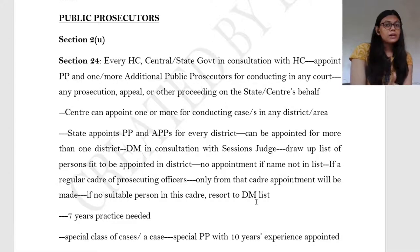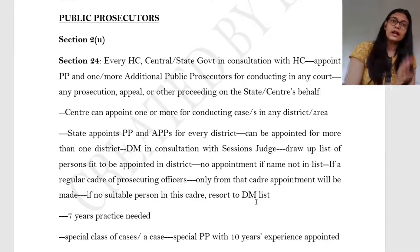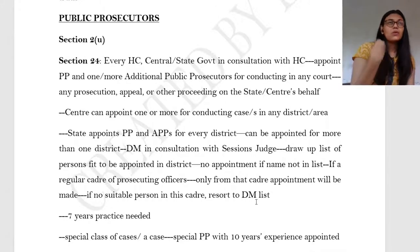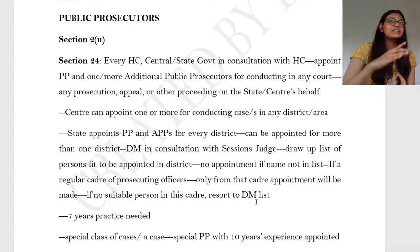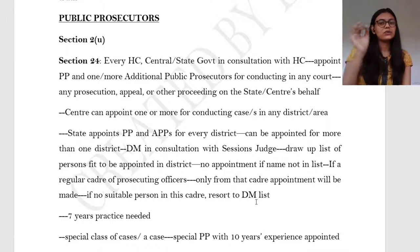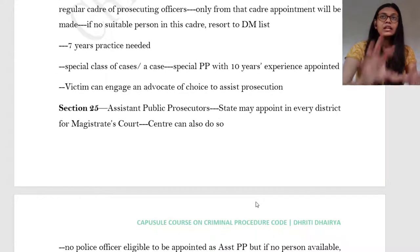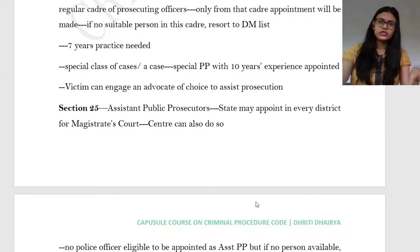To become a public prosecutor, you need to have seven years of practice. For special cases or a special class of cases, a special PP with ten years of experience can be appointed. Just because there is a PP in a case does not mean the victim has no right to engage any advocate — a victim can also engage an advocate of choice to assist the prosecution.